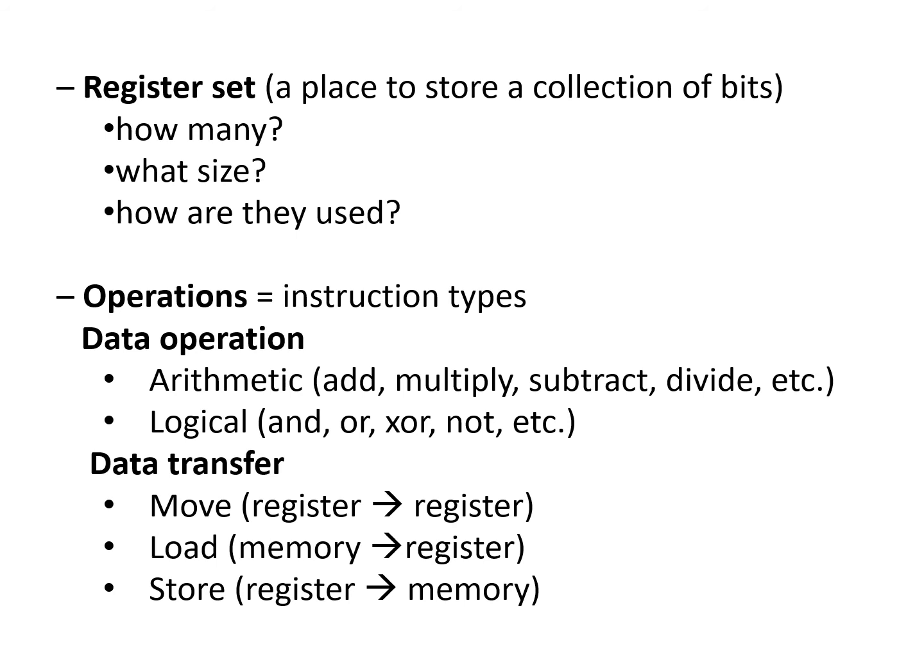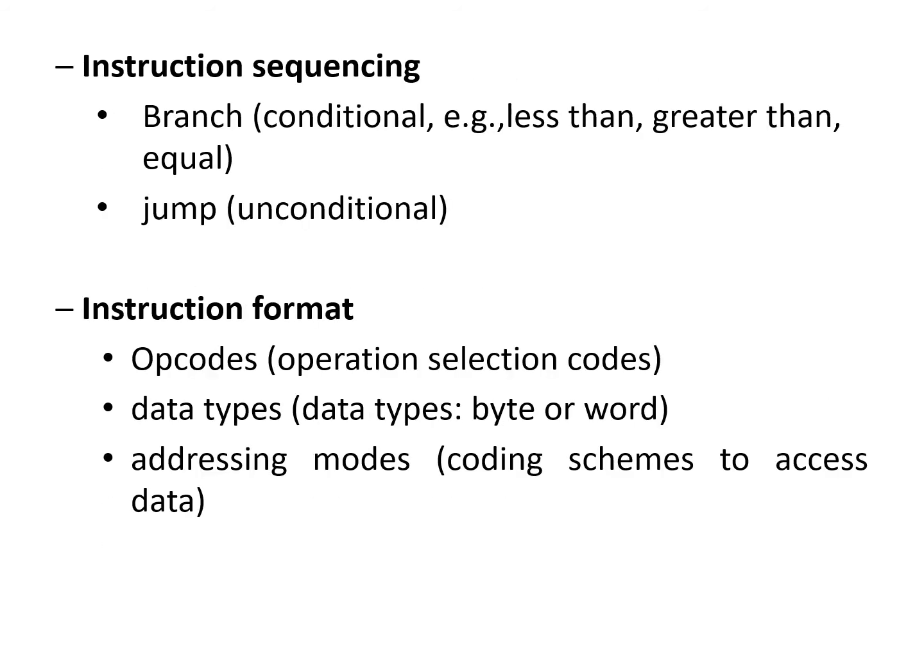The instruction types include data operations such as arithmetic and logic, data transfer, and instruction sequencing. Then there is the instruction format, which consists of opcodes or operation codes — the operation selection includes operations like add, multiply, divide, etc. Then come data types such as byte or word, and finally addressing modes, which are the coding schemes used to access data. These will be discussed in detail later.